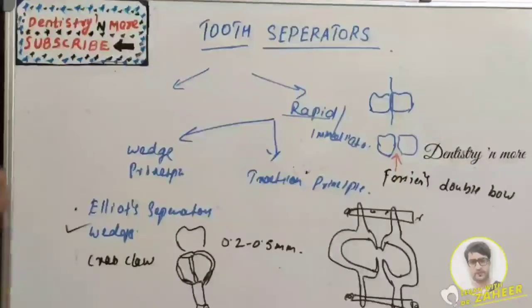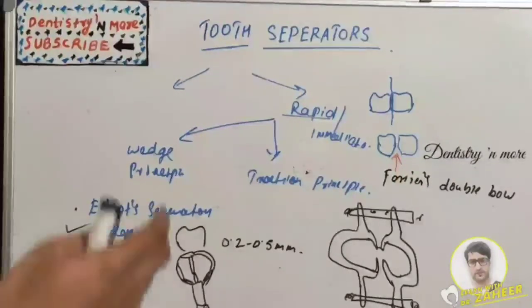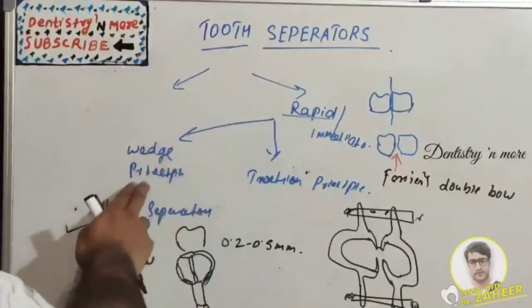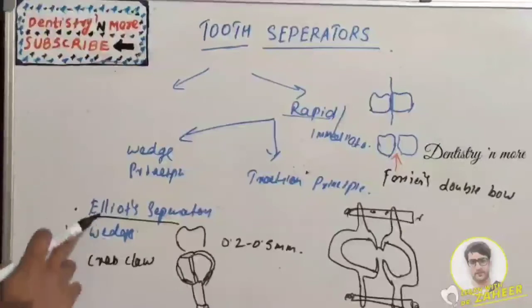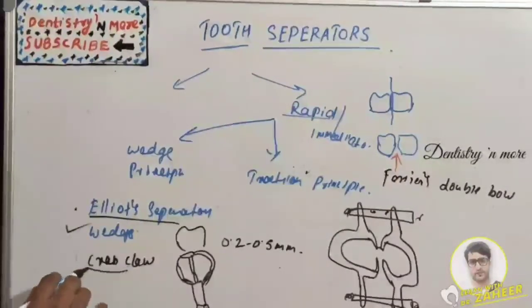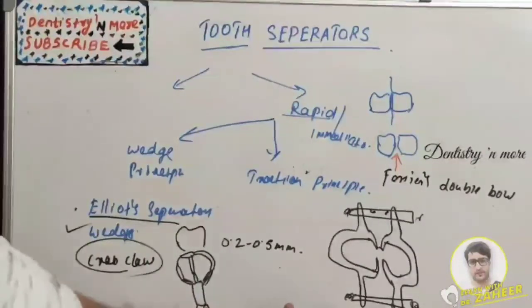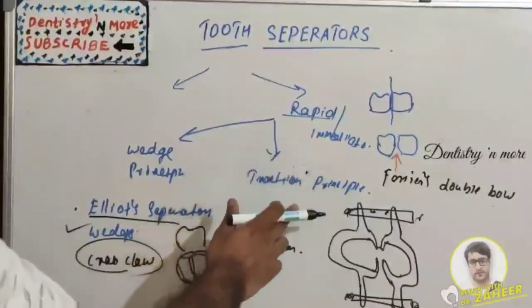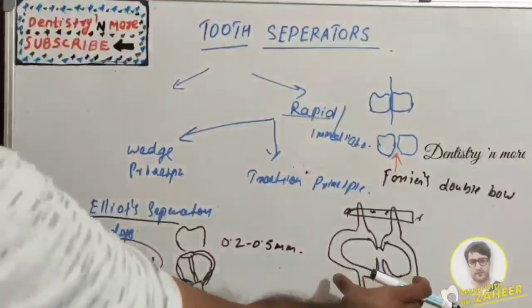Rapid separation: we have wedge principle and traction principle. In wedge principle, commonly used is Elliott separators and wedges, also known as crab claw because of its design. Double bow separator comes in the traction principle, Ferrier's double bow separator, which uses two teeth to get the separation.